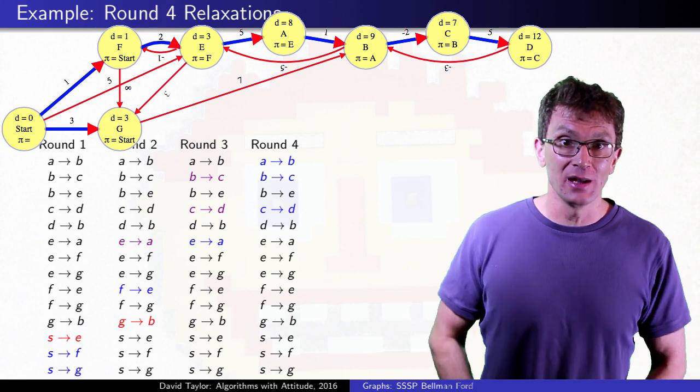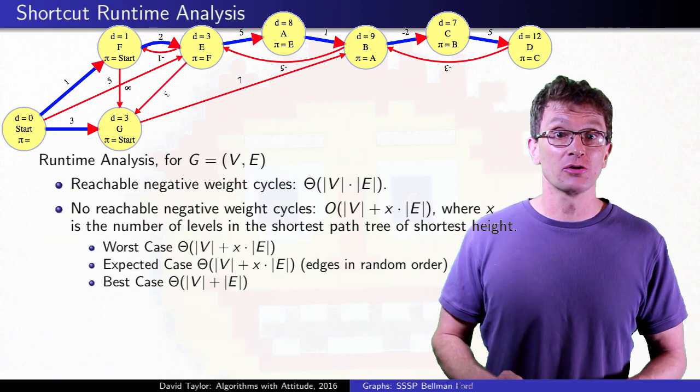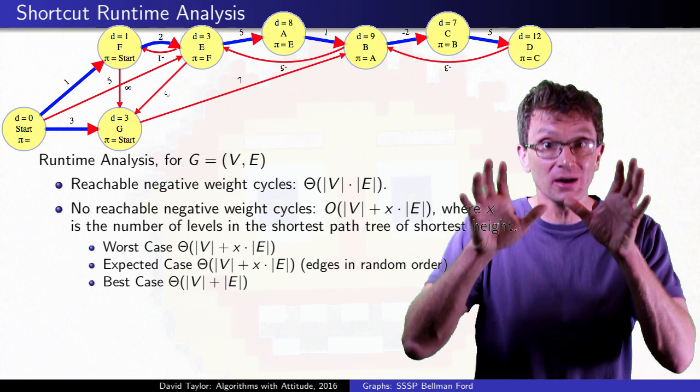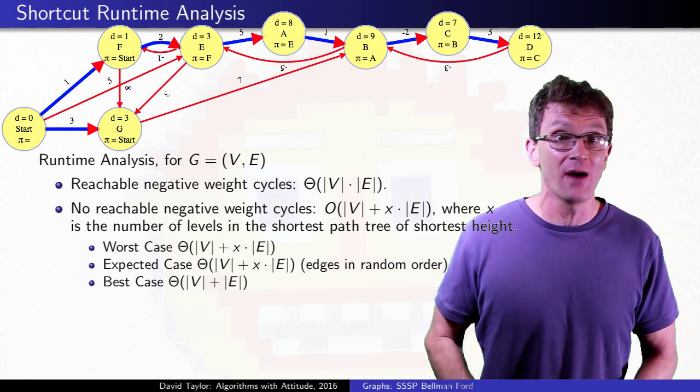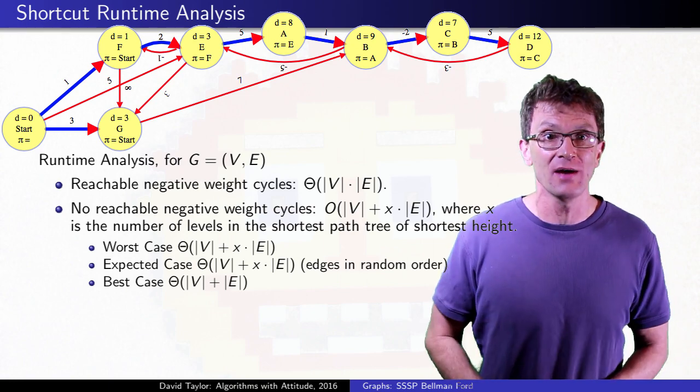In the fifth round, nothing will change, and we shortcut to the end of the algorithm. In the best case, the algorithm gets lucky and hits a critical edge ordering for the entire graph in one round, even if the shortest path tree has lots of levels.